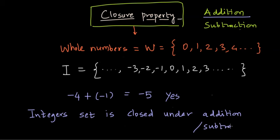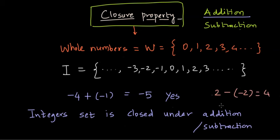Integers are also closed under subtraction. Even if you subtract any two numbers from the set of integers you will get an integer. For example, two minus minus two gives you four, which is in the integer set. So this is a very important property: integers are closed under both addition and subtraction.